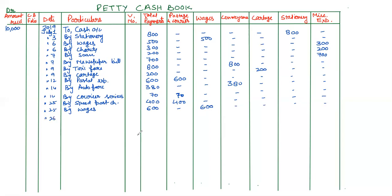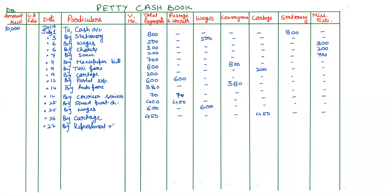On the 26th, paid cartage — by cartage, 450 rupees will come in the total payment column as well as the separate cartage column. Next is refreshment expenses — by refreshment expenses, 800 rupees. We do not have any separate column for this, so the amount 800 will come in the miscellaneous expenses column.